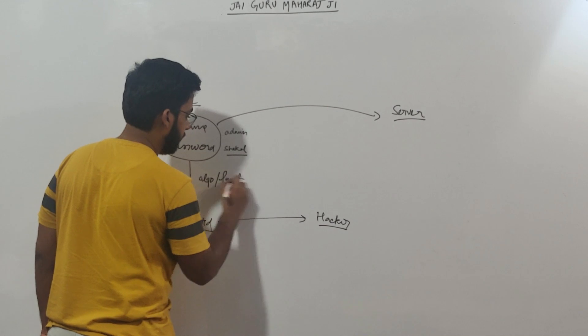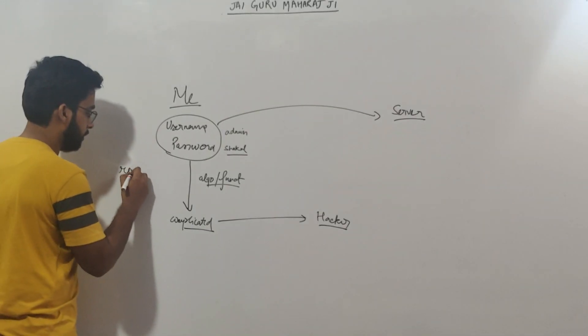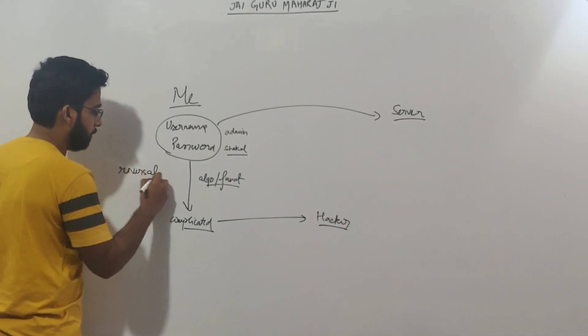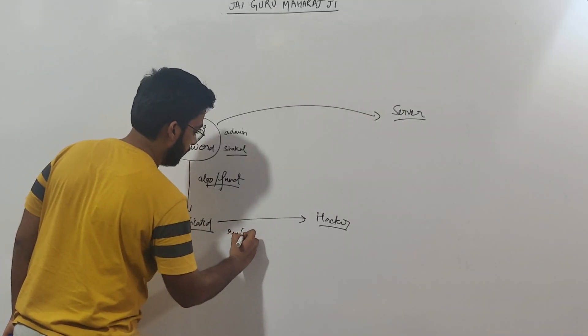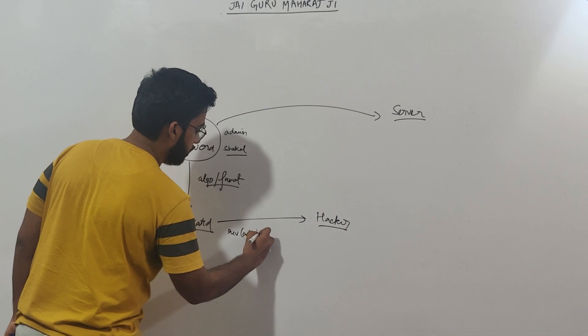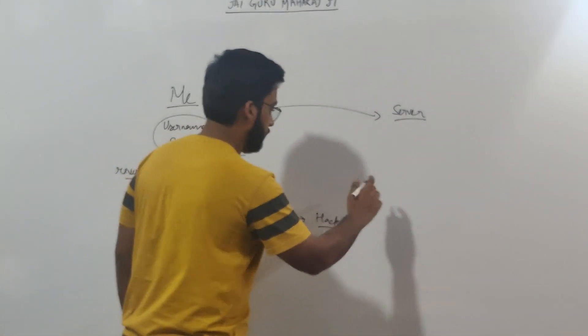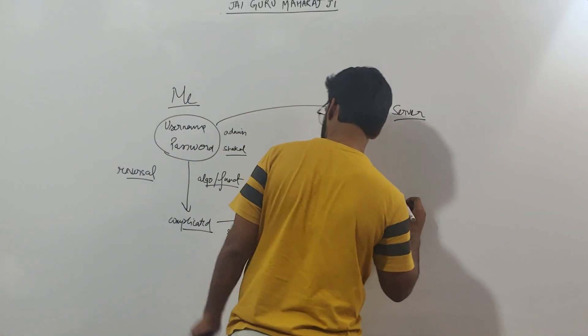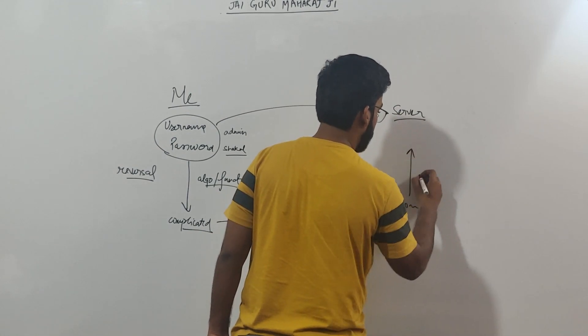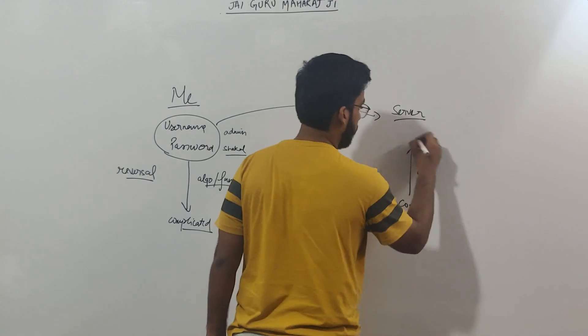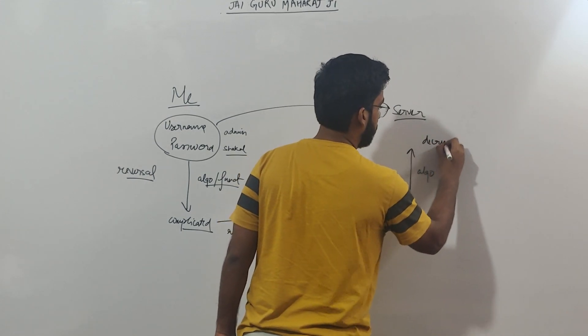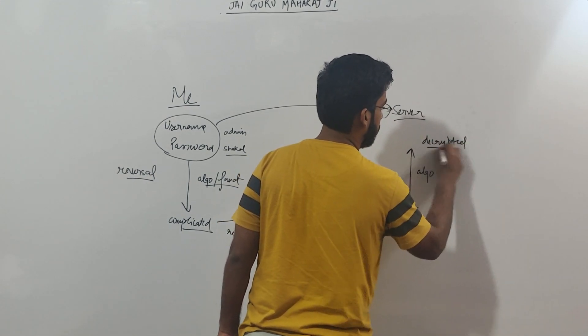So I will use an algorithm or a function. This could be anything. For the most basic function I could use reversal. So let's say I am using reversal. So instead of admin, I will be sending the reverse of admin. Now when this reaches on the other side, this complicated data, and I have shared across the algorithm, it will use the same algorithm to decrypt it. So I get the decrypted data on the server side.